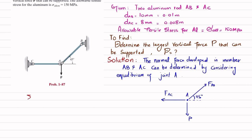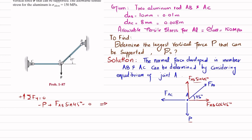The first equation of equilibrium is that the sum of all forces along the y-direction must equal zero, with upward forces taken as positive. P acts downward, so we write minus P. The vertical component of F_AB is F_AB sine 45 degrees. So: minus P plus F_AB sine 45 degrees equals zero, giving us P equals F_AB sine 45 degrees. This is equation number one.